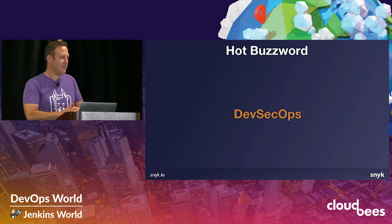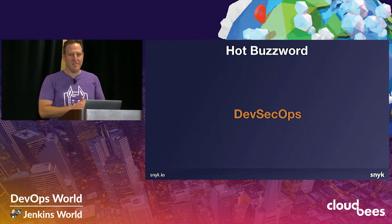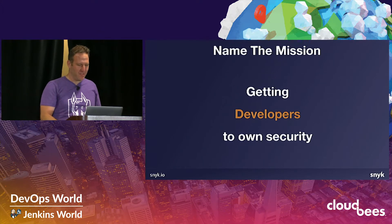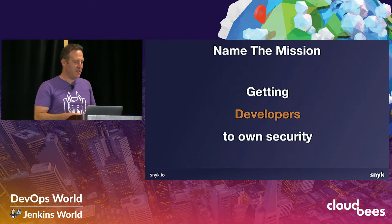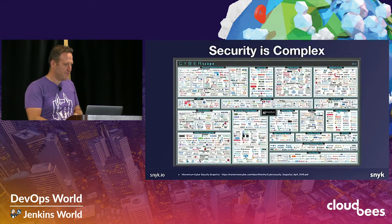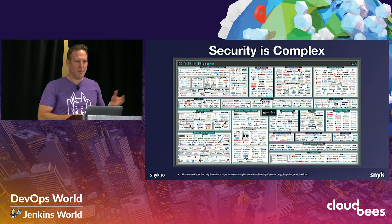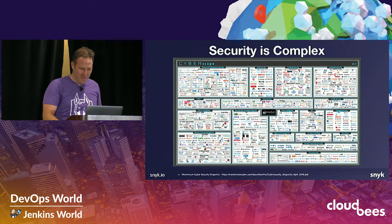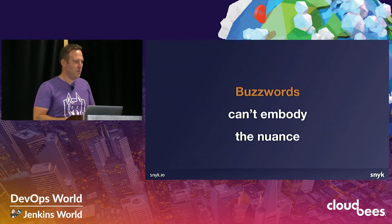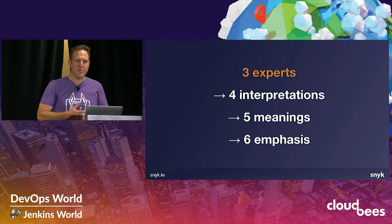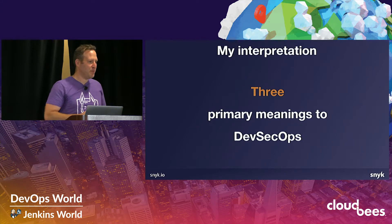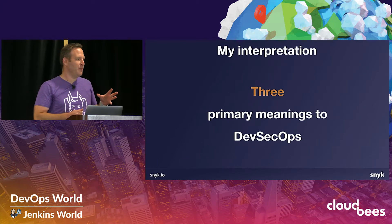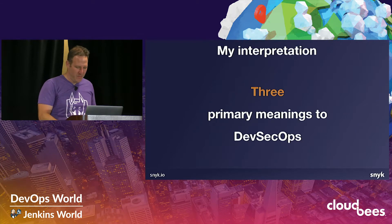DevSecOps is the buzzword du jour, and like every other buzzword, it comes with good connotations and bad connotations. What I love specifically about this is it embodies the long sought-after goal of getting developers to own security — giving it a name and actually helping with the momentum. But security itself is pretty complex, like you can see here in this cyberscape image. Bad words can't embody all the nuance that comes with it. If you put three experts today in a room asking what DevSecOps means, you'll get four different interpretations, five different meanings, and six different emphases.